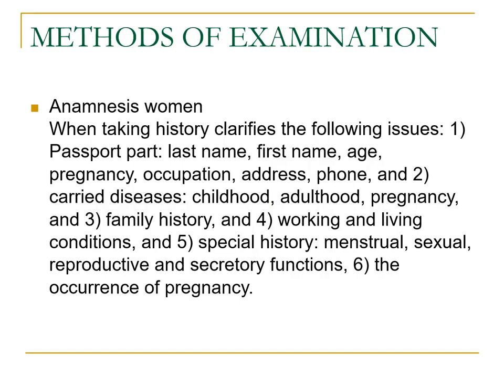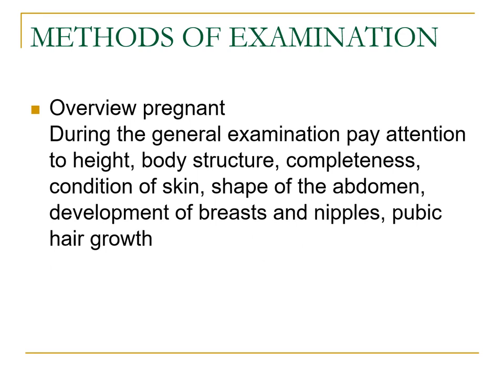How do we examine anamnesis in women? When taking history, we clarify the following: general data, family history, diseases in childhood and adulthood and during pregnancy, working and living conditions, menstrual, sexual, reproductive, and secretory functional history, and the occurrence of pregnancy. During the general examination, pay attention to height, body structure, completeness, condition of skin, shape of the abdomen, breasts, and nipples.